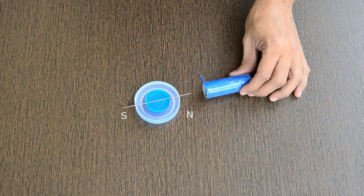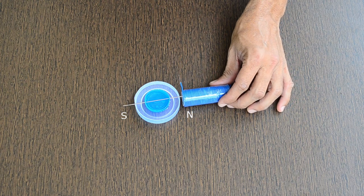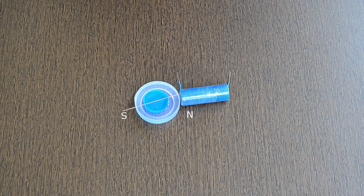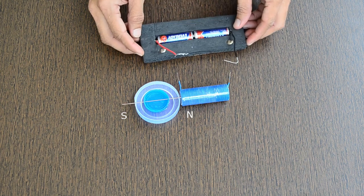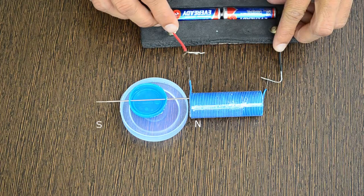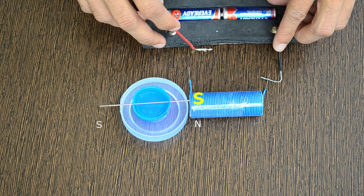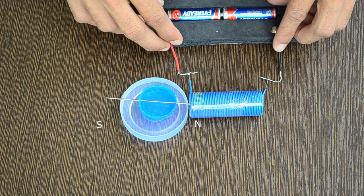We will place this needle compass such that part of the needle is inside the coil. When the current flows to the coil, north pole of the needle is pulled inside. This end of the coil is behaving like a south pole, as we know that opposite poles attract.